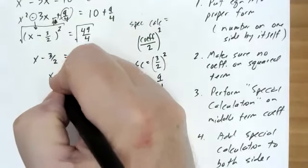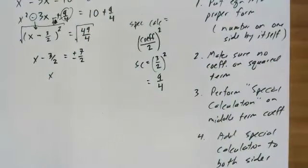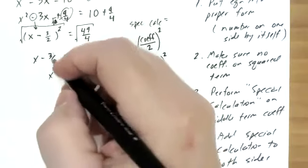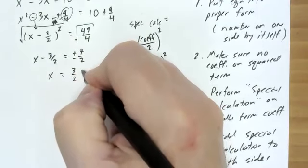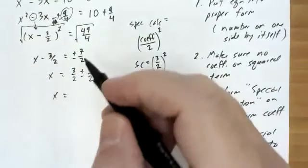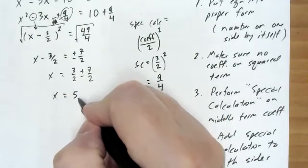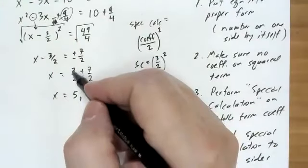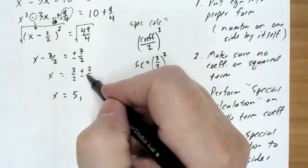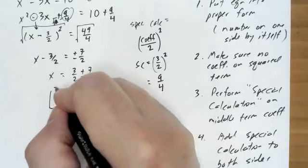I'm going to add 3 halves to both sides. I forgot — when everything is greater than a number, don't forget in the world of math there's actually two possible numbers, either plus or minus 7 halves. So now I'm going to add 3 halves to both sides. My solution is going to be 3 halves plus or minus 7 halves, so I'm going to have two solutions. The first one: 3 halves plus 7 halves is 10 halves, which is 5. And 3 halves minus 7 halves is negative 4 halves, which is negative 2. And now I have solved this quadratic equation.